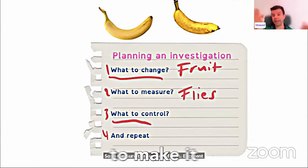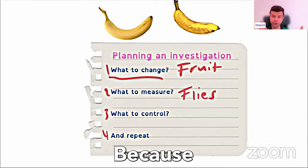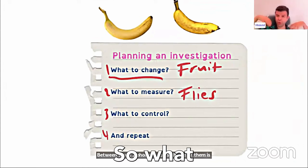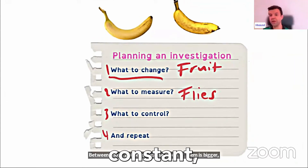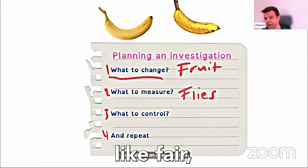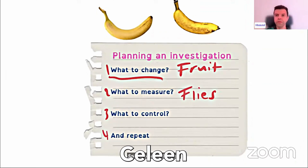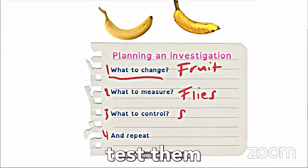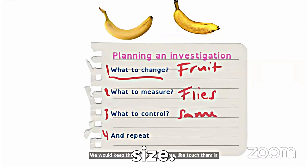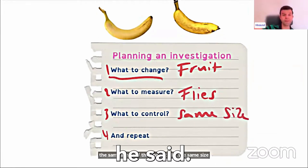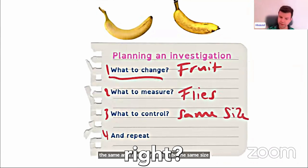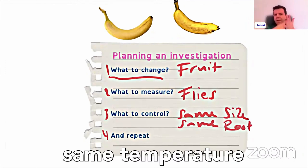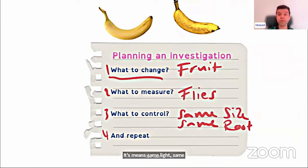What factors do I need to keep constant to make a fair comparison between those two fruits? Because if one of them is bigger, then it will attract more flies. So what factors can I keep constant? We would keep them in the same area, test them in the same area, and they have to be the same size. Same size, same area — maybe the same room — which means same light, same temperature, same everything, so it would be fair.